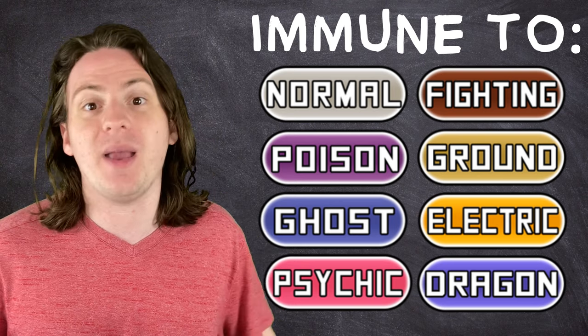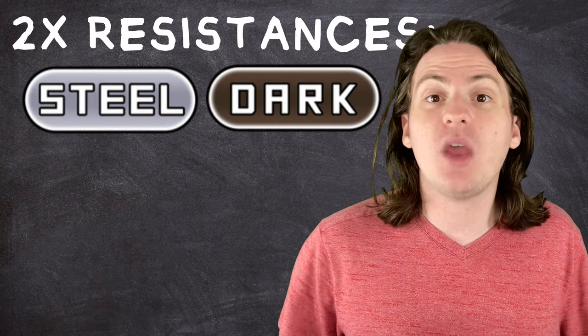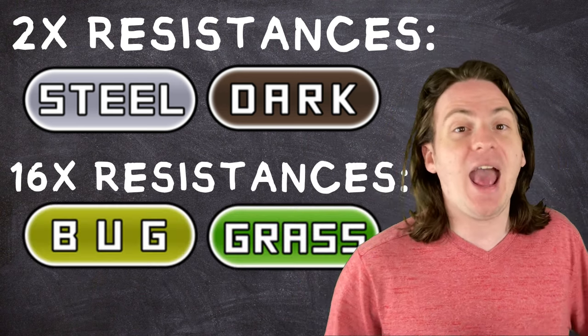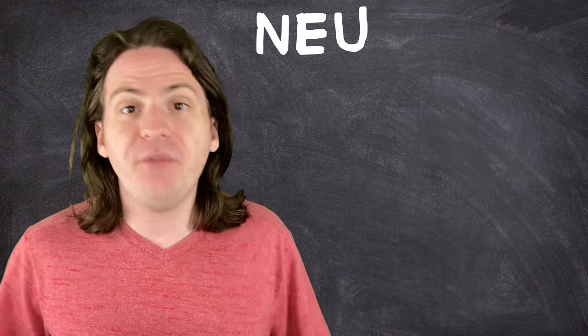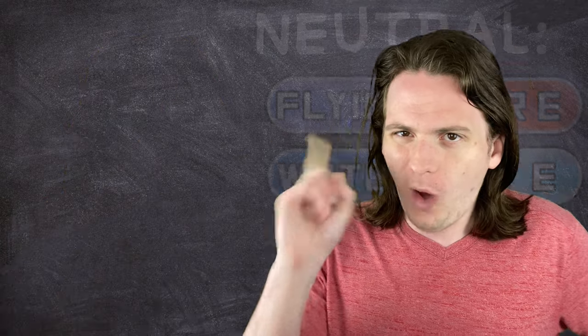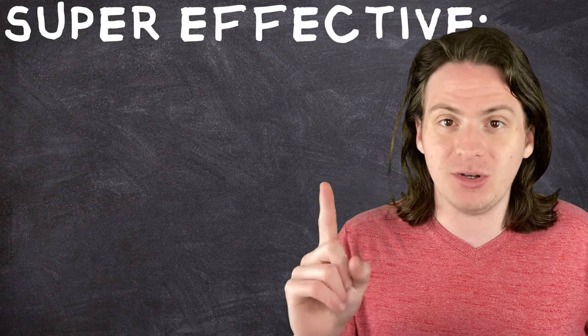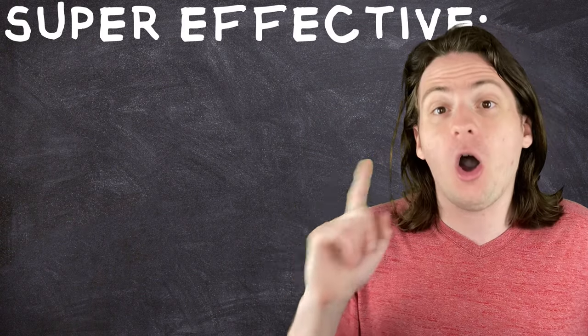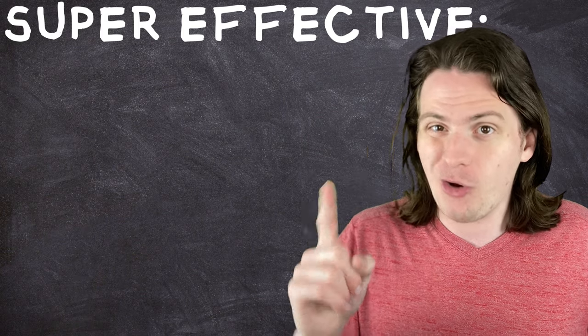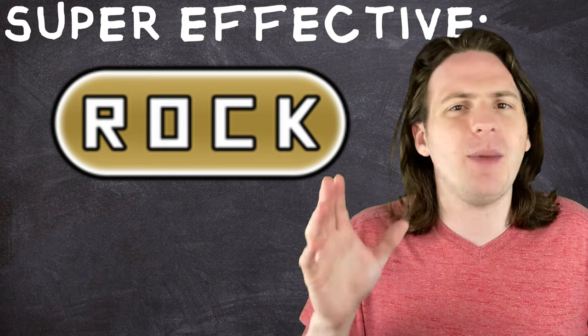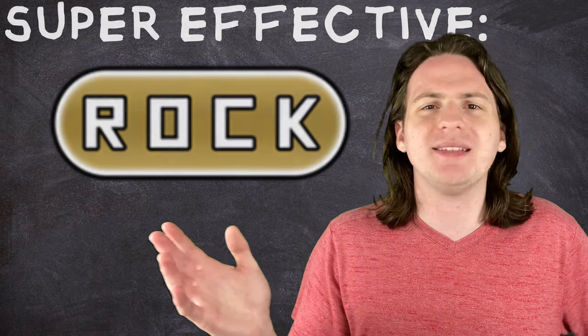On top of that, it resists steel and dark, and has a whopping 16 times resistance to both bug and grass. Get absolutely dunked on Parasect. Everything else hits it for neutral damage, but there is one type that can hit this monstrosity for super effective damage, making it technically the best offensive type in the game in terms of coverage. Rock, hitting with a simple 2 times modifier. Just like Charizard and Tommy, all you gotta do to stop this thing is chuck some rocks at it. I feel like this episode is having a real weird message at this point.